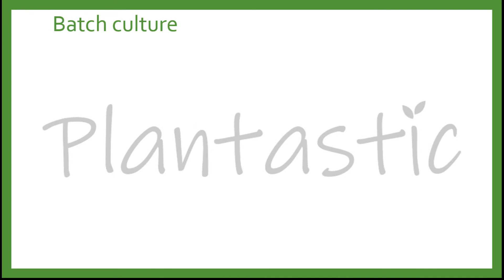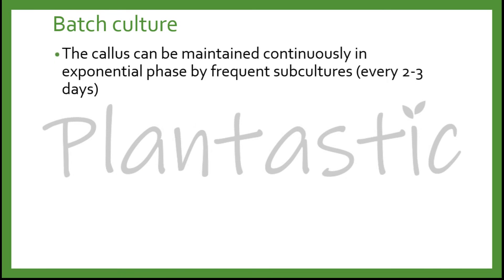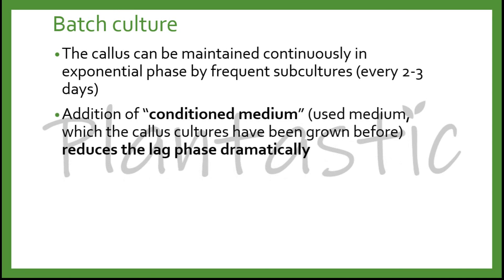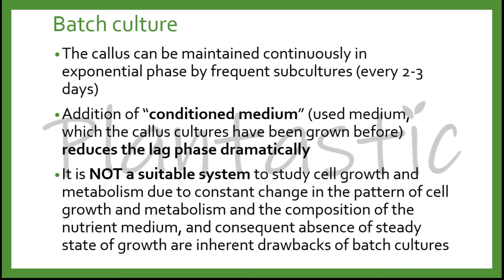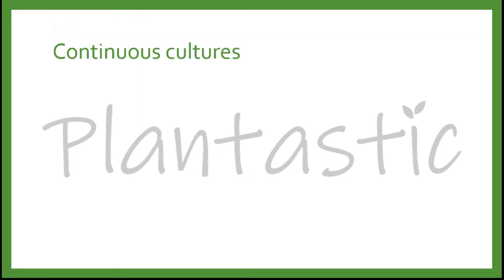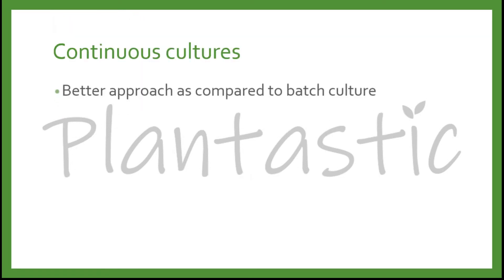For batch culture, the callus can be maintained continuously in the exponential phase by frequency of culture, which is about every 2–3 days. Addition of conditioned medium — the used medium in which the callus culture has been grown before — reduces the lag phase dramatically. Therefore, it is not a suitable system to study cell growth and metabolism due to the constant change in the pattern of cell growth and metabolism, and the composition of the nutrient medium, as well as the consequent absence of a steady state of growth, are inherent drawbacks of the batch culture.